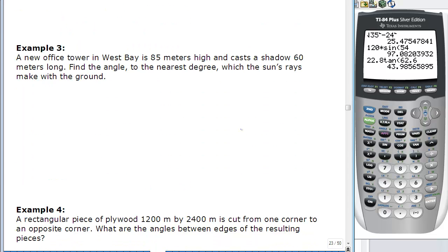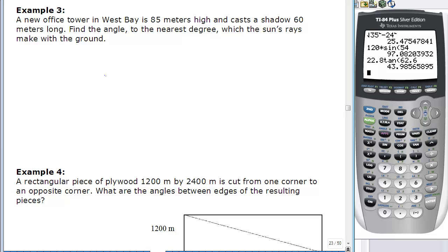One more example for this video. We have a new office tower in West Bay that is 85 meters high and casts a shadow 60 meters long. Find the angle to the nearest degree which the sun's rays make with the ground. So this time we're going to look for the angle. Here's our tower. We have the sun making its way down. Along the ground we have a shadow. We get a nice 90 degree angle here. We know the building is 85 meters, the shadow is 60 meters, and we want angle theta here. Right triangle means we can use our trig functions.